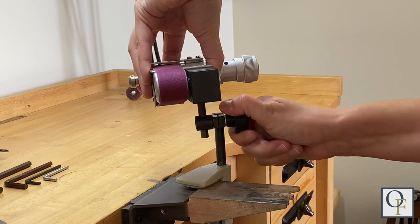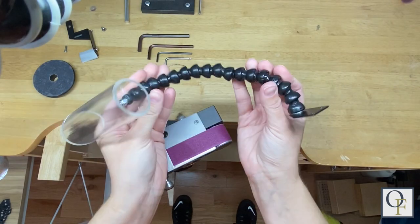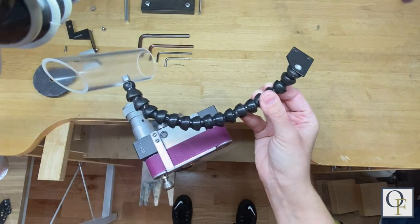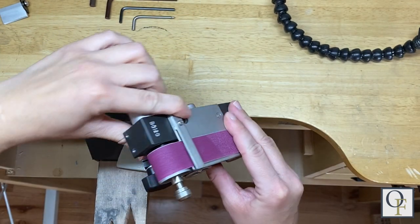Now let's go over the rest of the attachments. This sander comes with a flexible arm that has an acrylic tube on the end to position near your dust collector.